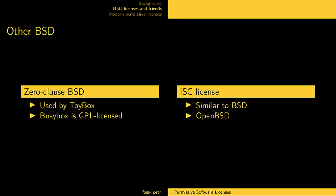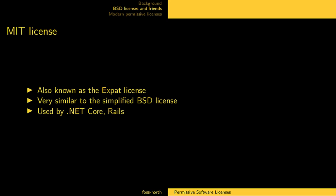The MIT license is also known as the Expat license, because the current wording of it first appeared in the license for the Expat software, which is an XML parsing library. The MIT license is very similar to the simplified two-clause BSD, and it's used by .NET Core, Ruby on Rails, and a bunch of other software.